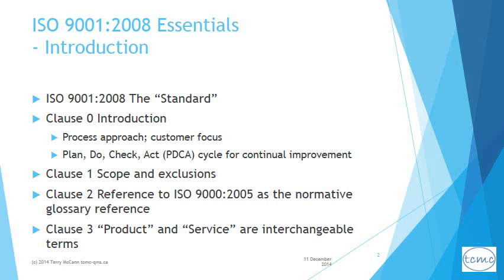ISO 9001 is often referred to simply as 'the standard,' which saves repeated references to ISO 9001 within the document. The standard refers to itself as 'this standard' or 'this international standard.' Chapters or sections are referred to as clauses. The actual requirements only begin in clause 4.